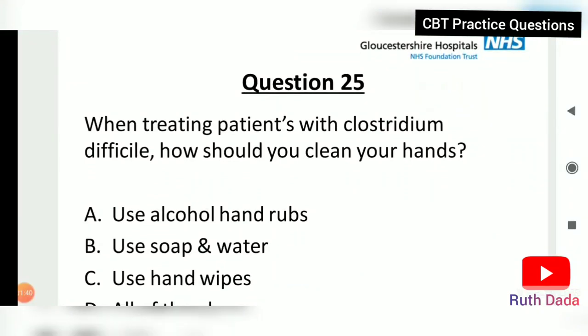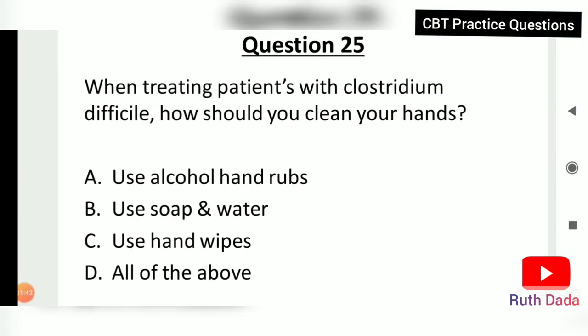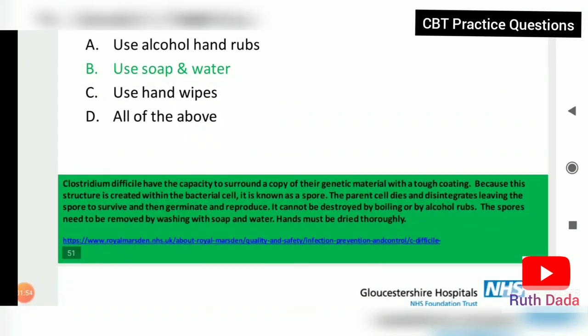Question 25: When treating patients with Clostridium difficile, what should be used for hand hygiene? Soap and water. Clostridium difficile has the capacity to surround a copy of its genetic material with a tough coating called a spore. The spores cannot be destroyed by boiling or alcohol rubs; they must be removed by washing with soap and water and dried thoroughly.